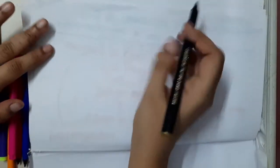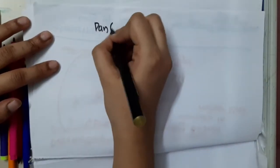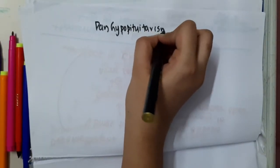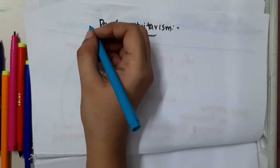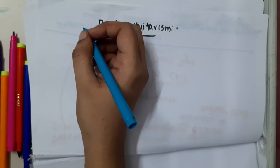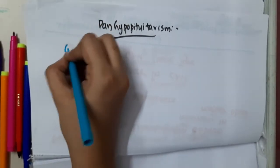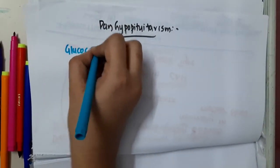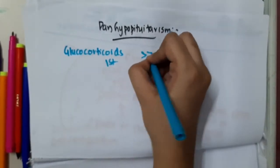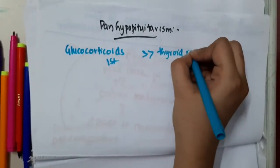Hello friends, now let us learn the hormone replacement in panhypopituitarism. In panhypopituitarism, glucocorticoids are given first, followed by thyroid replacement therapy.